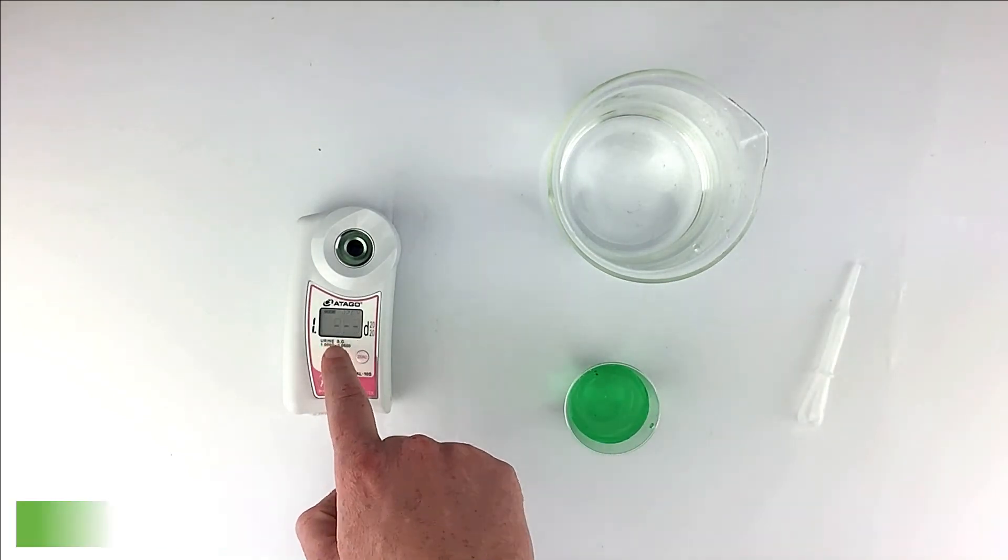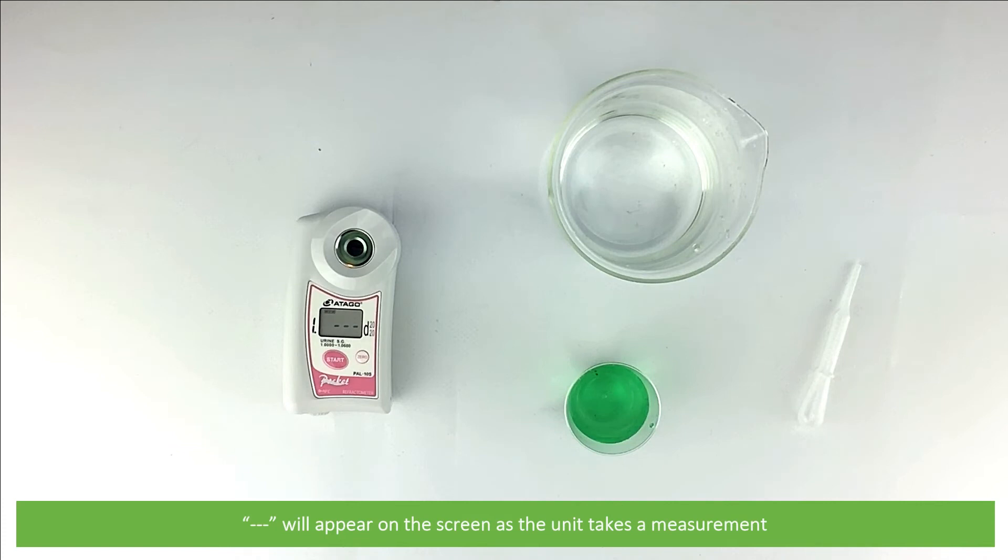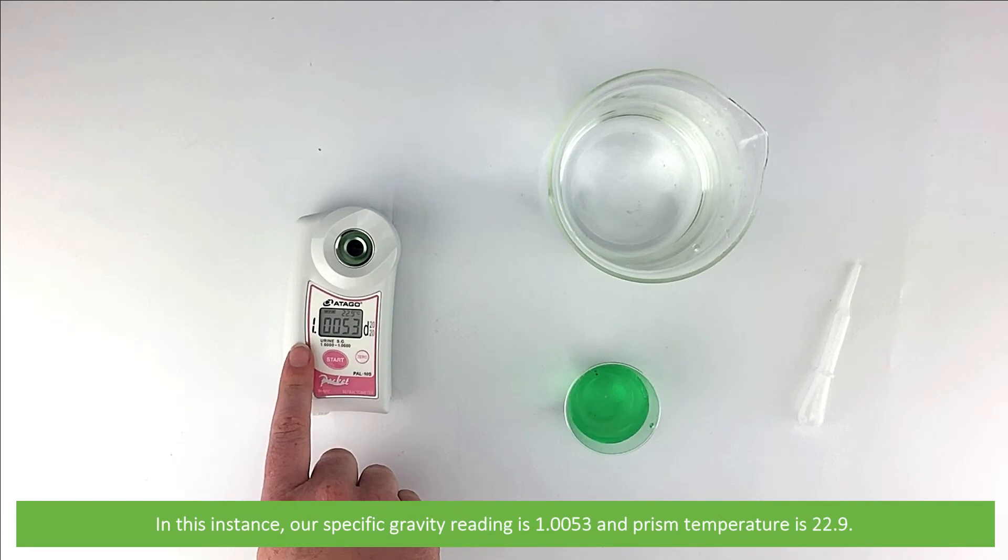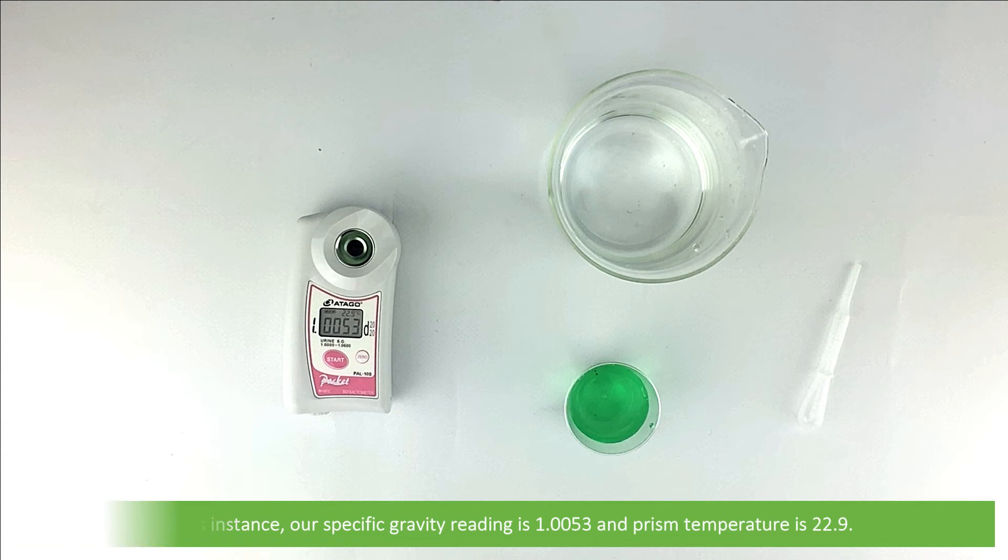Press the Start key. Three dashes will appear as the unit takes a measurement. Then the measurement and prism temperature will display on the LCD. In this instance, our specific gravity reading is 1.0053 and prism temperature is 22.9 degrees Celsius.